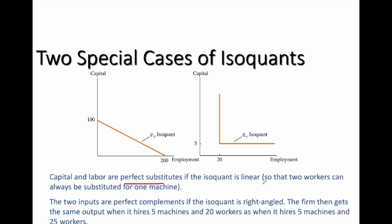When inputs are perfect substitutes, the isoquant is a linear line. In this example, two workers can always be substituted for one machine. When we calculate the slope of this isoquant, it is a constant value equal to two, meaning two workers can always be substituted for one machine.